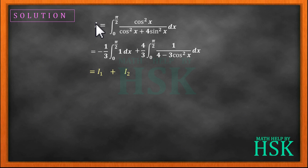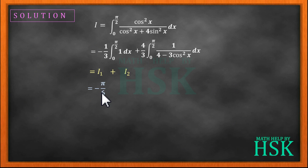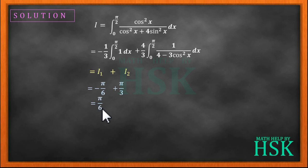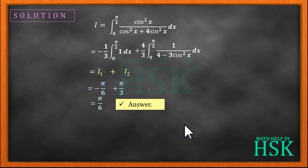Therefore the value of I, which equals I1 + I2, will be equal to −π/6 + π/3 = π/6, which is the required answer.